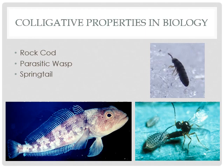In nature, we see colligative properties in action. The rock cod, the parasitic wasp, and the springtail all use colligative properties to survive conditions they otherwise wouldn't be able to.